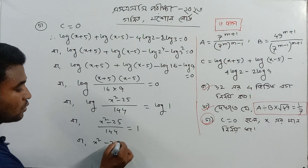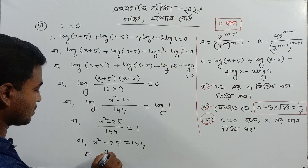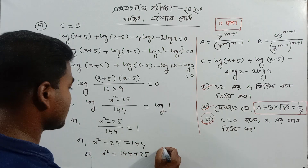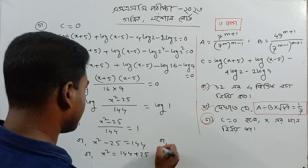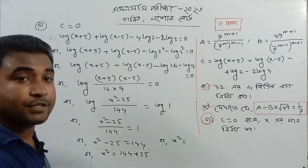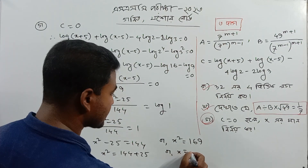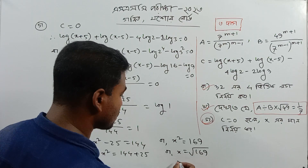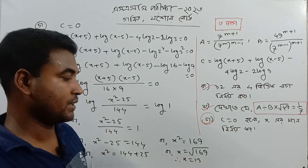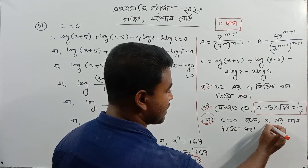r equal to 114. x squared equals — that means x squared minus 13. That means x squared minus 13.